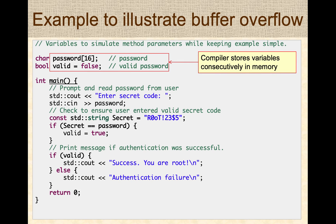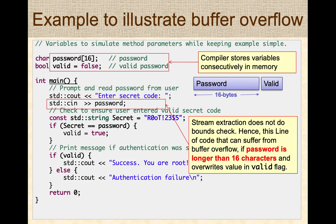However, there are a couple of things to note here. The array of characters for the password and the Boolean valid flag are stored consecutively in memory — first 16 bytes for the password variable, then one byte for the valid flag. When data is read, the stream extraction operator does not do a bounds check on an array of characters. So if the user enters more than 16 characters, the data will overflow the password buffer and overwrite the valid flag, and this behavior can be used to subvert the operations of the program.